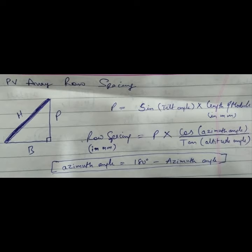In this PV array row spacing, how to calculate it? We use hypotenuse, perpendicular, and base. When we have to find out the height from ground level of our solar panel, P equals sine tilt angle into length of module which is in mm. Then for row spacing, you have to find it out...